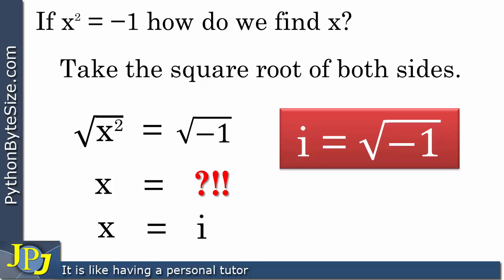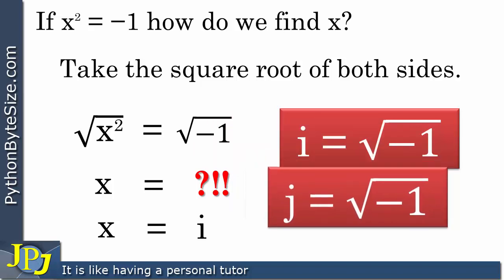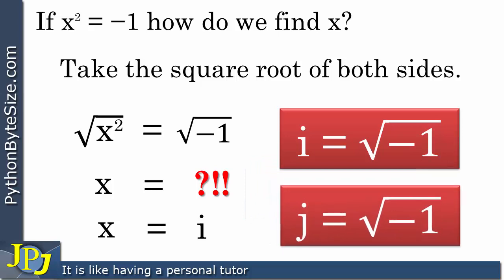So Python doesn't use i to represent the square root of minus one — it uses j. You will often see this written down as j equals the square root of minus one, but j is the symbol that represents the square root of minus one. This applies to both lowercase j and uppercase J, so you can use lowercase j or uppercase J to represent the imaginary part of a complex number.